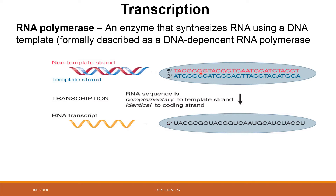The strand shown in red is known as the coding strand. If you compare the sequence of the coding strand with the RNA transcript, you will find that this sequence is exactly identical to each other, except that in RNA, instead of thymine, uracil is present.